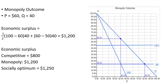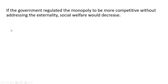In summary, the competitive outcome ignoring externality gives total economic surplus of $800; the monopoly outcome ignoring the negative externality gives $1,200; and the socially optimal outcome is highest at $1,250. Interestingly, if the government regulated the monopoly to be more competitive without addressing the externality — for example, by mandating marginal cost pricing — social welfare would actually decrease, because the monopolist would produce more units and the large external cost makes that harmful. Hope you found this video helpful.